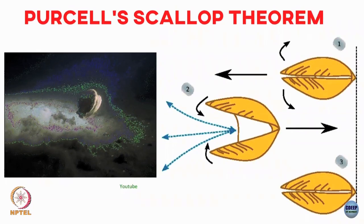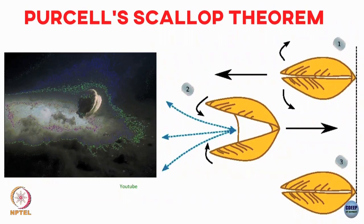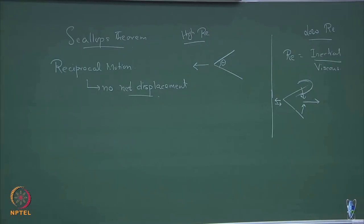What Purcell said is called the Purcell scallop theorem: at low Reynolds number, whatever amount you move in one direction, as you reverse the motion you are going to move back in the opposite direction by the same amount. So there is not going to be any net displacement. The scallop theorem says that if you have any sort of reciprocal motion — where you trace back whatever trajectory you had taken, opening and precisely time-reversing to close back down — a reciprocal motion will not lead to any net displacement.